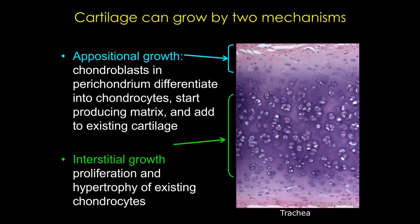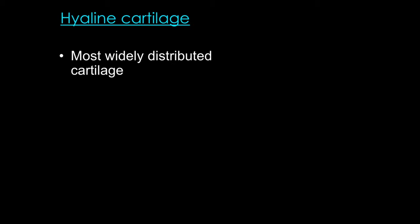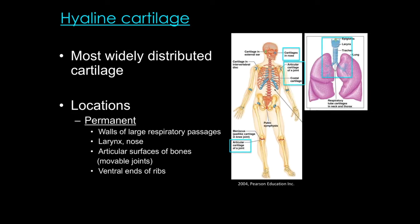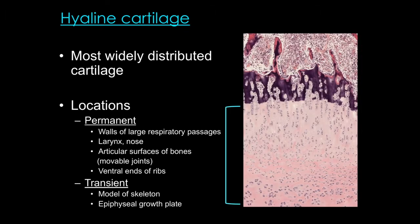Now let's look at the three different kinds of cartilage. First, we'll start with hyaline cartilage, which is the most widely distributed cartilage. Its name comes from the Greek word meaning transparent glass or crystal. It's found in permanent locations such as the walls of the trachea and the bronchi, the nose, the larynx, and the articular surfaces of the bones in our movable joints. Hyaline cartilage is also found more transiently in development, serving as a model for much of our skeleton and remaining in the epiphyseal growth plate, highlighted here with a blue bracket.